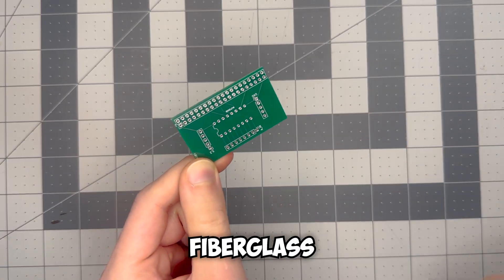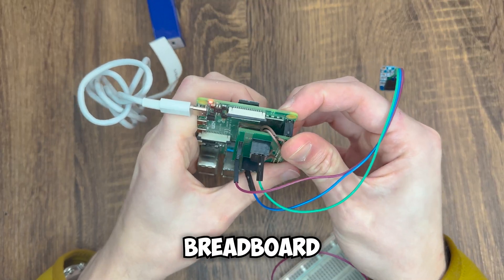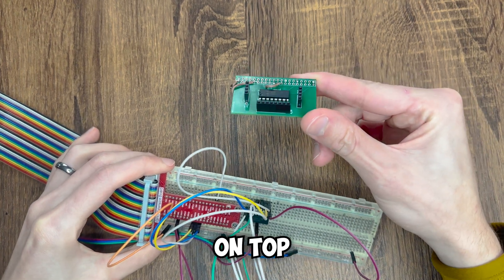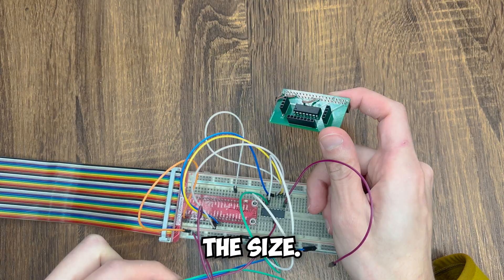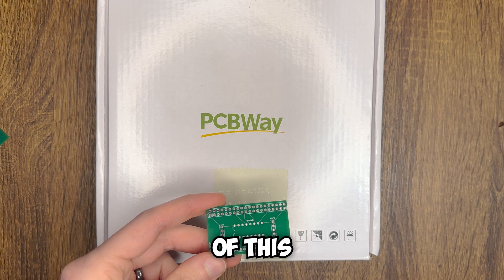A PCB is a fiberglass board that has copper traces built into it, giving you the ability to turn your breadboard prototype into a small and reliable circuit. The circuit you see on top is exactly the same as the one on the bottom, but a fraction of the size. This particular PCB was made by PCBWay, who's a sponsor of this video.